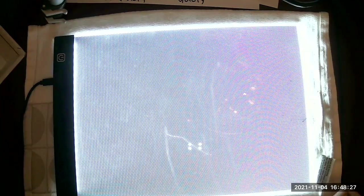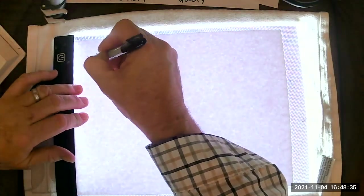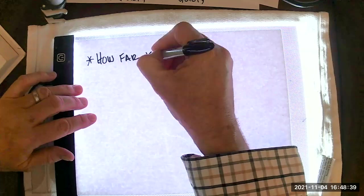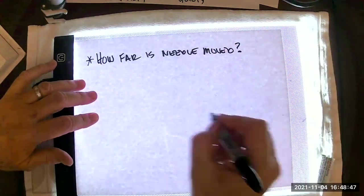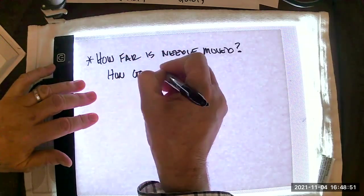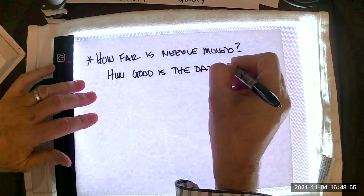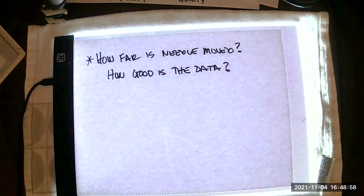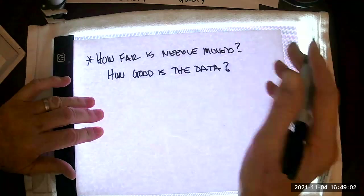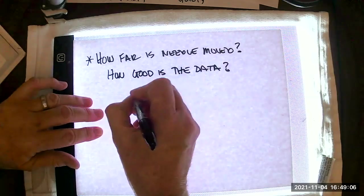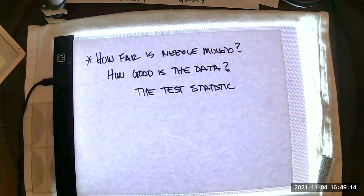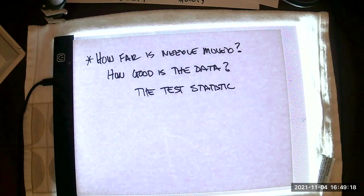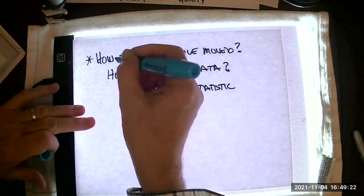Just one or two more things. First, how far does the needle move? In other words, how good is the data? We have something that measures how far the needle is moved, and we call this the test statistic. How far is the needle moved? We have what we call the test statistic. I will make this much more explicit on Monday.